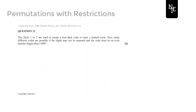So let's read this question. It says that the digits 1 to 7 are to be used to create a 4-digit code to enter a locked room. If we had just stopped this scenario right here and I just asked you in how many ways can you create these 4-digit codes using the digits 1 to 7, then that would be a straightforward application of your permutation formula. Because then what you would have is 7 distinct objects, and from those 7, you want to just pick 4.